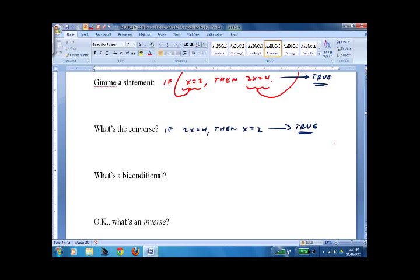Now, since they're both true, we can write them as biconditional. We put this if and only if in the middle, and we say 2x equals 4, if and only if x equals 2. Or we could write it the other way, x equals 2, if and only if 2x equals 4. So, that's a biconditional.